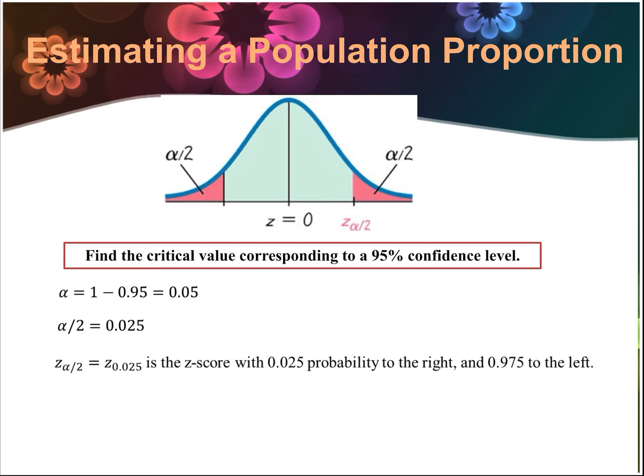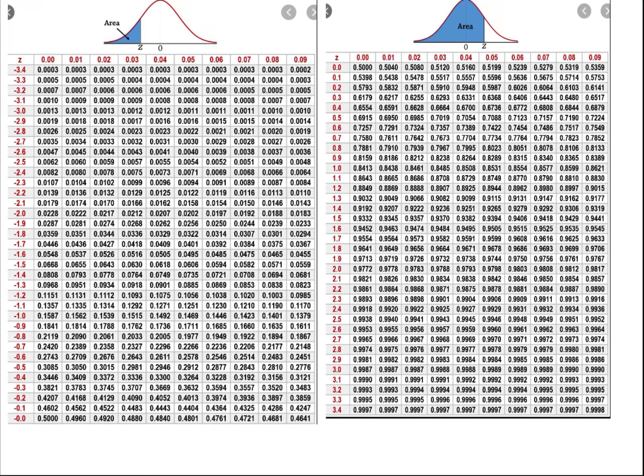Z sub alpha over 2, or z sub 0.025, is the z-score with a 0.025 probability to the right, which is the same as a 0.975 probability to the left. When we use the notation z sub a number, like z sub 0.025, that indicates the 0.025 is the probability on the right-hand side. So we go to our standard normal distribution chart and find the probability for 0.975 and the z-score that goes with it.